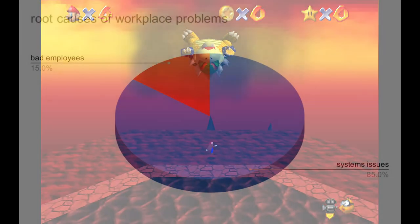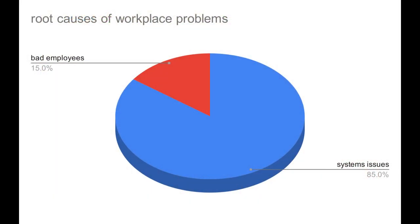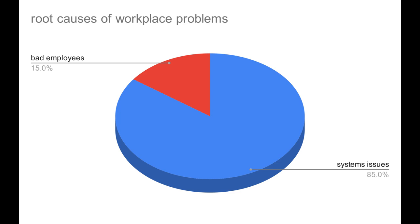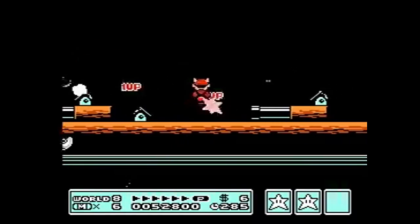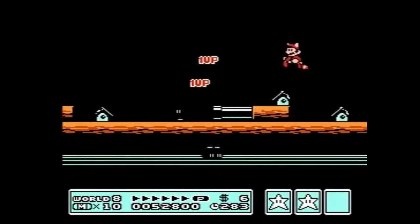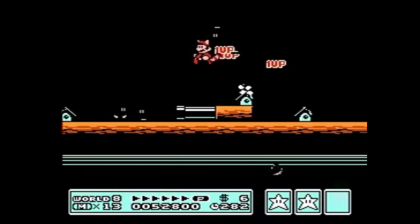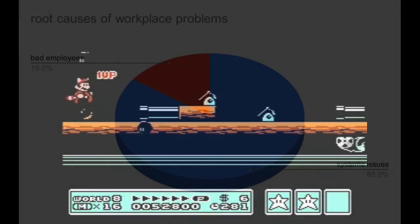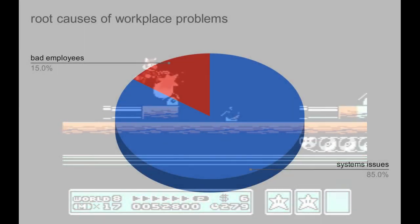There's a concept in management called the 85-15 rule that says that 85% of problems in the workplace are caused by systems issues. The vast majority of employees want to work and take pride in their work, so fixing a broken system and making it foolproof is the way to solve problems.